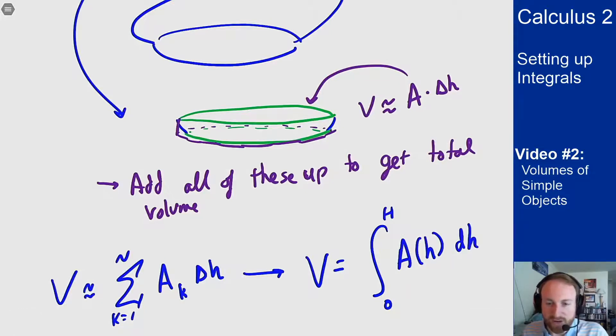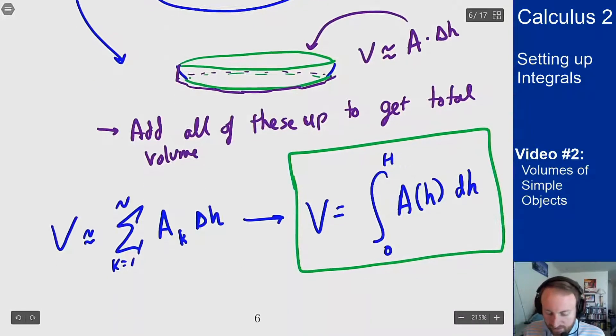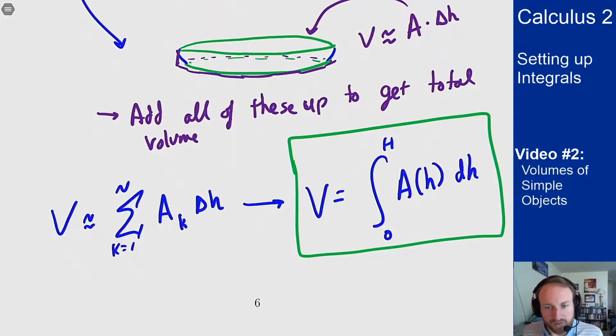So if that sum on the left approximates the volume of the object, this integral should give me the exact volume of this object. And this is the formula we'll be using going forward to find the volumes of these solids given the cross-sectional area. So this is the idea of computing the volume of a solid given that you know its cross-sectional area at each height.